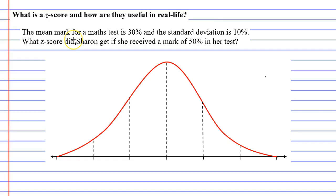So I've got a little example here to help illustrate what a Z-score is all about. It says the mean mark for a math test is 30%, and the standard deviation is 10%. What Z-score did Sharon get if she received a mark of 50% in her test? So we're going to label our bell curve.